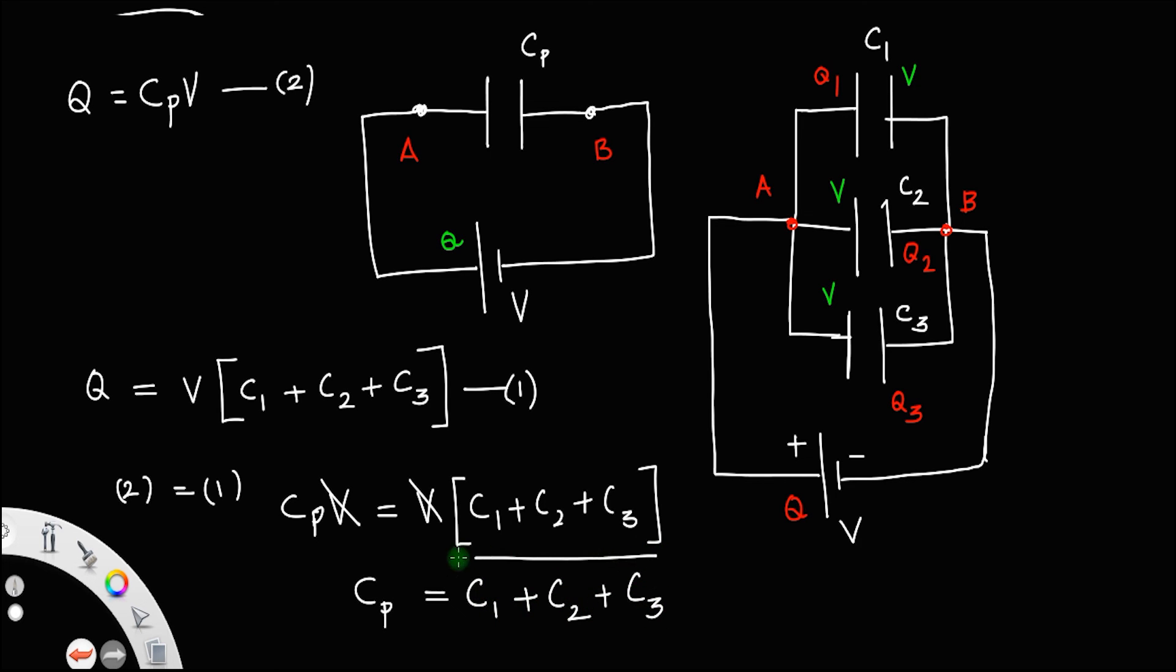So, this is the effective capacitance of the parallel combination of capacitors. You only need to add all these individual capacitors in order to get the effective capacitance. So, if we use a capacitor with value C1 plus C2 plus C3, instead of these 3 capacitors, you get the same effect.